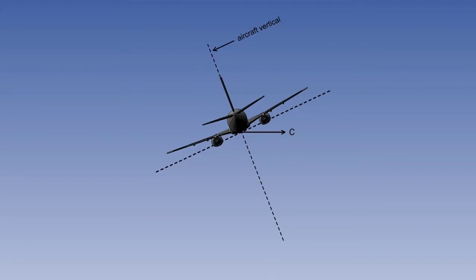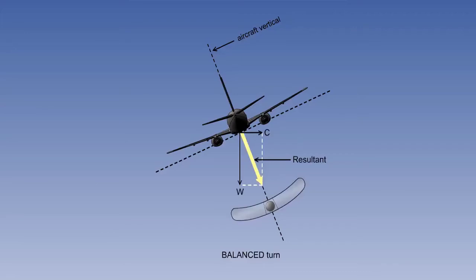The magnitude of the centrifugal force experienced will be proportional to the true airspeed and the rate of turn. The ball will be displaced by this force and will come to rest in the tube when the centrifugal force acting on the ball equals the resultant weight of the ball.